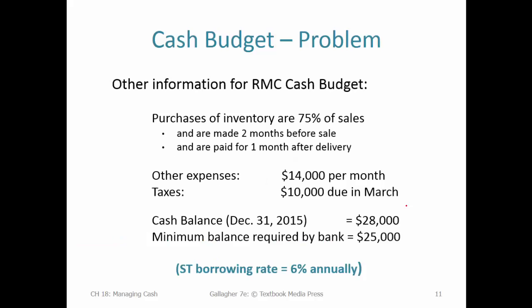There are a lot of details to assemble before doing the budgeting process. Our own purchases of inventory are 75% of sales — this is how we replenish. We make those purchases two months before the sale and pay for them one month after delivery. We have overhead expenses of $14,000 per month, and taxes due once per quarter, probably in March.